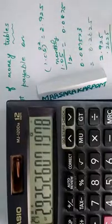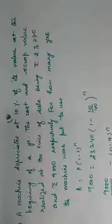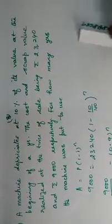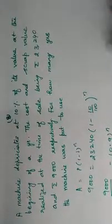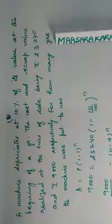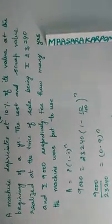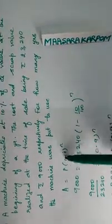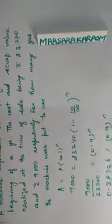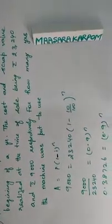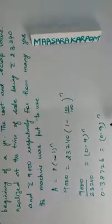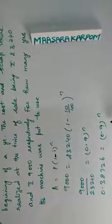Question Number 8: Depreciation. Using the formula P × (1 − i)^n, substitute the values suitably. n is equal to 9 years.